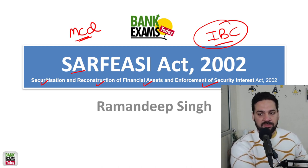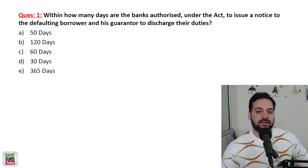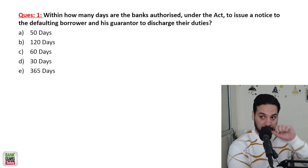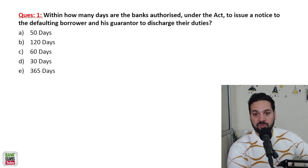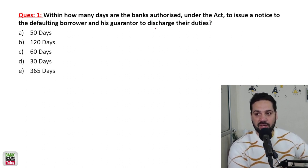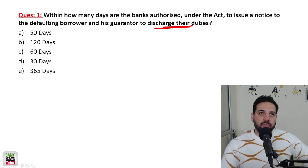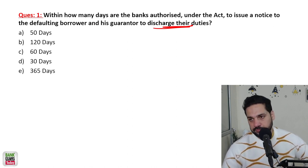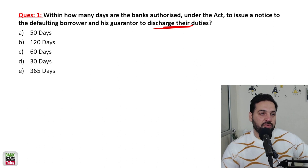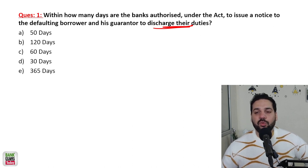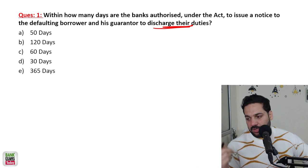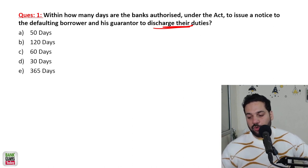So today we are going to do the SARFAESI Act in MCQ format. First question: within how many days are banks authorized under the act to issue a notice to defaulting borrowers and their guarantors to discharge their duties? How many days will the bank give the borrower?